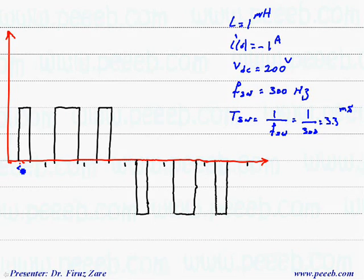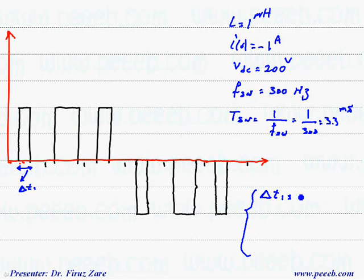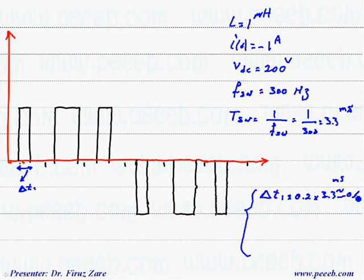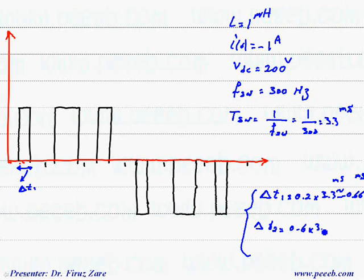We can find delta T for each interval. Delta T1 is 20%, meaning 0.2 times 3.3 milliseconds, which is approximately 0.66 milliseconds. Delta T2 is 0.6 times 3.33 milliseconds, which is approximately 1.98 milliseconds.